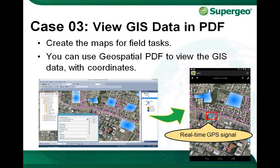We'll continue with the third case: viewing GIS data in PDF format. With SuperGIS Desktop version 3.2, you can export GIS data into PDF format. For example, you can create a map for field use, and use geospatial PDF to view GIS data with coordinates, as shown in the figure on the left-hand side. You can export the map to PDF, bring it on your tablet, and integrate it with a real-time GPS signal to check information.